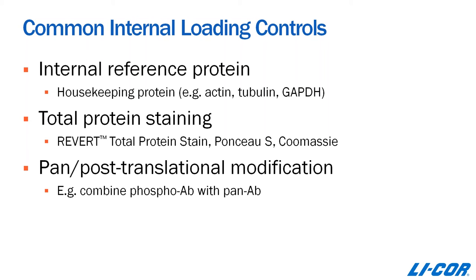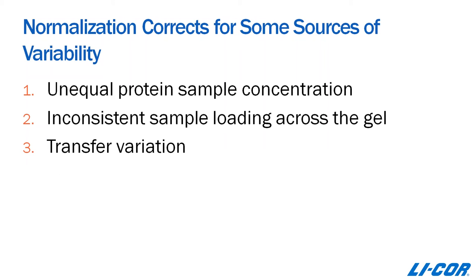As I mentioned briefly, in a perfect world Western blotting would allow you to load exactly the same amount of protein in every gel without any transfer issues or unavoidable errors. Using normalization allows you to correct for some sources of variability that will inevitably be introduced. The first type is unequal protein sample concentration. The second would be inconsistent sample loading across the gel. And the third type is transfer variation itself.